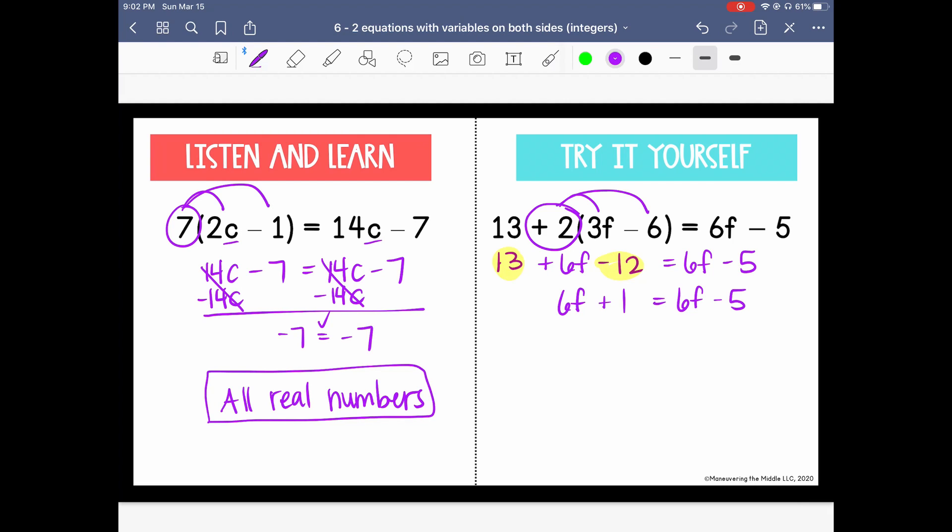So let's collect our variables. Let's take them again to the left. But we'll see again that when we subtract 6f it cancels my variables from the left and the right. But now I have a statement that says 1 equals negative 5. This is false. So our answer here is that there is no solution.